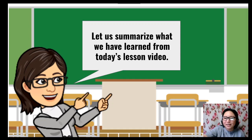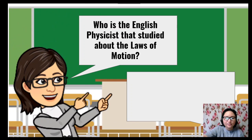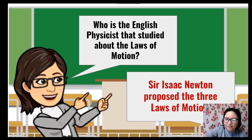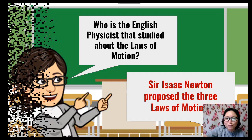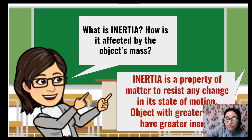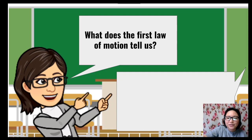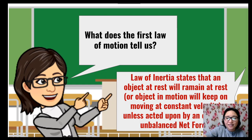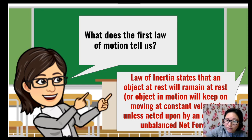Let us now summarize what we have learned from today's video. Who is the English physicist that studied the laws of motion? It is Sir Isaac Newton, who proposed the three laws of motion. What is inertia? Inertia is the property of matter to resist any change in its state of motion. Objects with greater mass have greater inertia. What does the first law of motion tell us? The law of inertia states that an object at rest will remain at rest, or an object in motion will keep moving at constant velocity, unless acted upon by an unbalanced external net force.